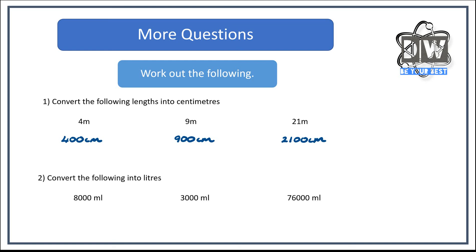What about the milliliters into liters? So we'd have 8 liters there, 3 liters there. And 76,000 milliliters would give us 76 liters. Because we're dividing all of those by 1,000.